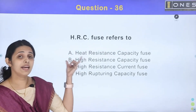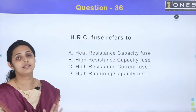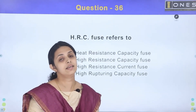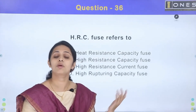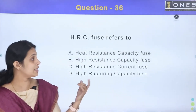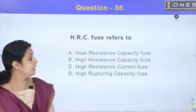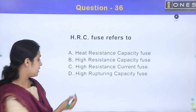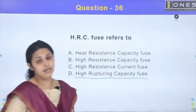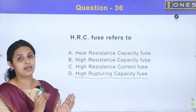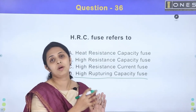For low current applications, we use thin lead alloy wire. For high current applications, we use copper. The HRC Fuse — High Rupturing Capacity Fuse — is designed for high fault current applications.